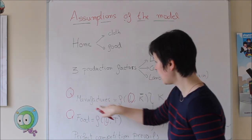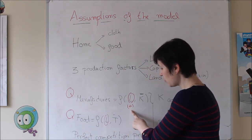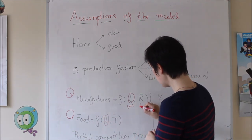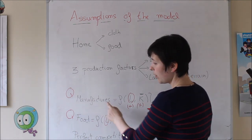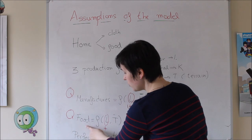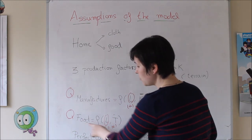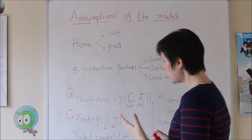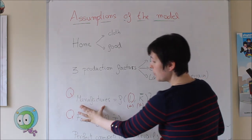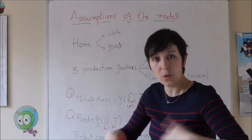The relationship between inputs and outputs is positive. If you introduce more labor in manufacturing, you get a higher output; the same with capital — more capital gives more manufacturing output. Similarly, more labor in food gives more food production, and more land gives higher food production. Globally, the output depends on the inputs: as higher as the amount of inputs you introduce, you get a higher output.